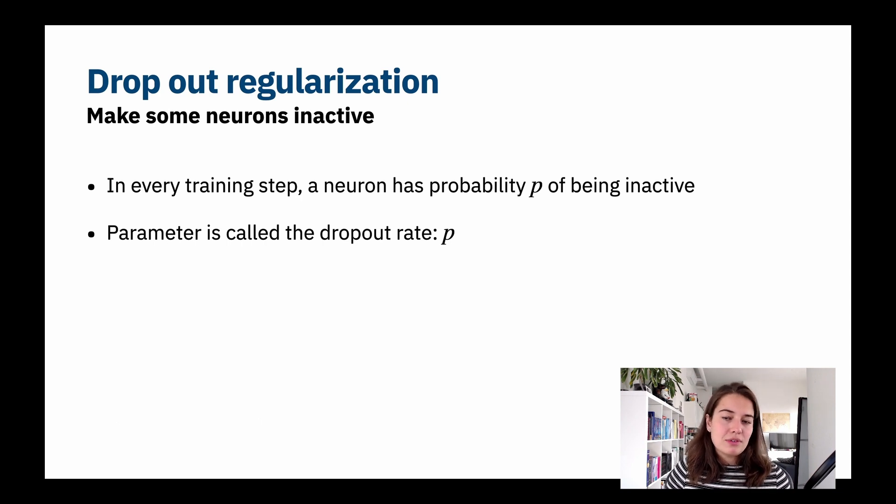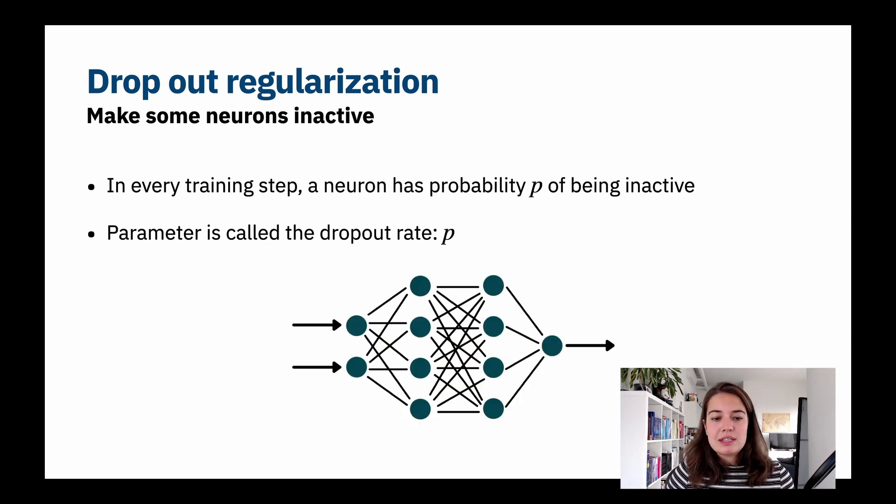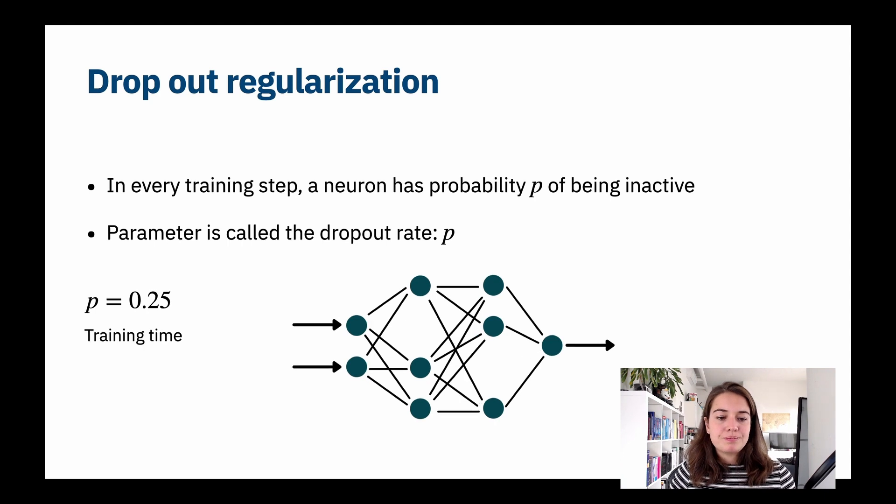Let's go over how this works in training. Let's say we have this nice little network and we say our dropout rate is 0.25, so every neuron has one-fourth chance of being inactive during training time.